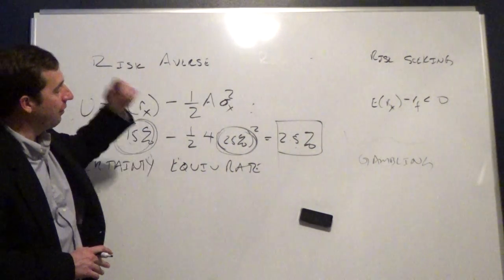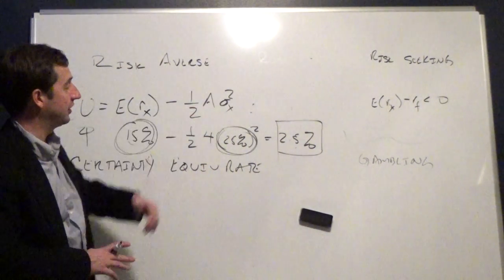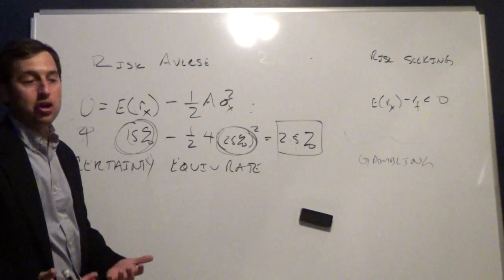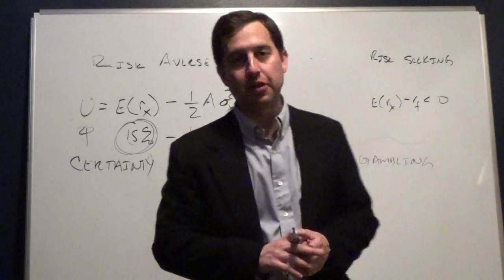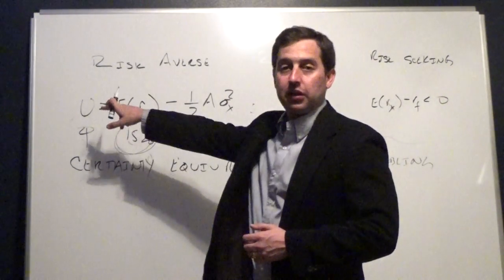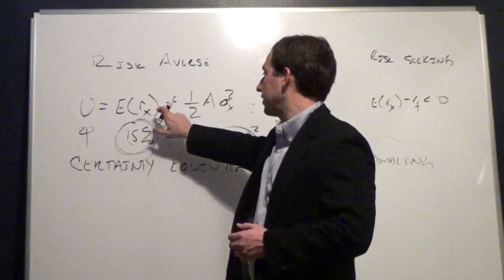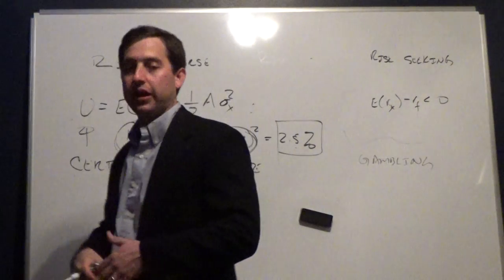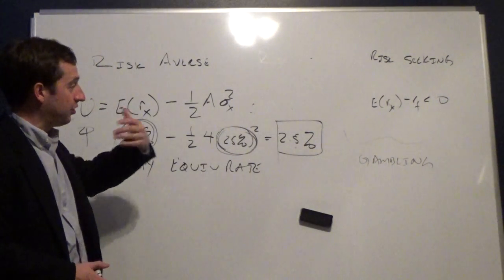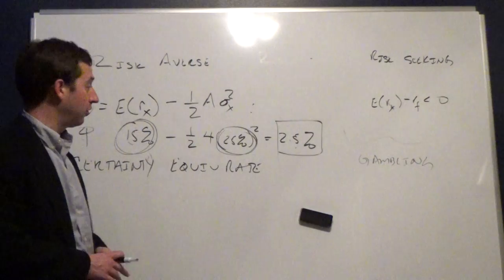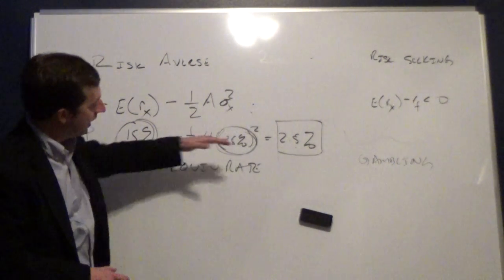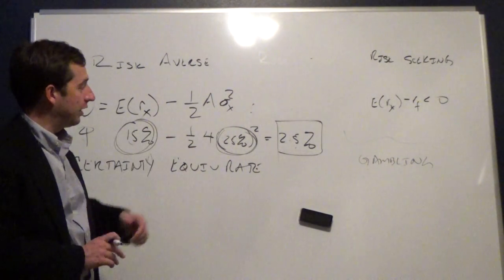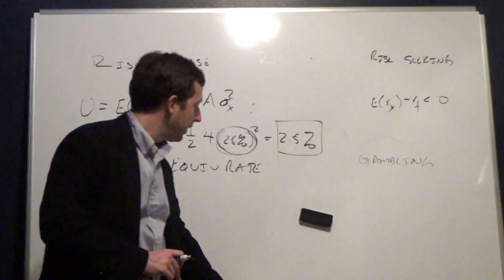This is how we decide whether to invest in a portfolio — how we handle risk with this utility function. You'll note that this utility function is a function of expected return and variance — the first two moments of the return distribution. This assumes the investor doesn't care about higher moments such as skewness and kurtosis. Under that assumption, this is quadratic utility, and we can derive this certainty equivalent rate.